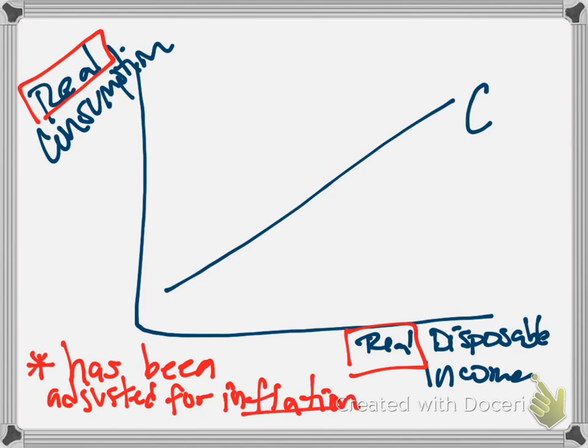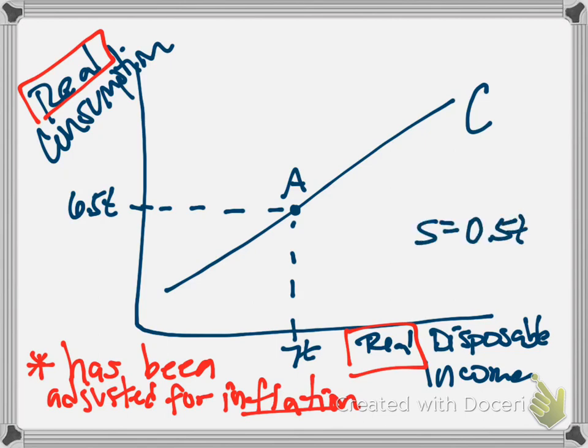What this is saying is, if our disposable income was $7 trillion, then we might be here at point A on the consumption function and have spending of $6.5 trillion. And if that were the case, then we would know that our savings was half a trillion.